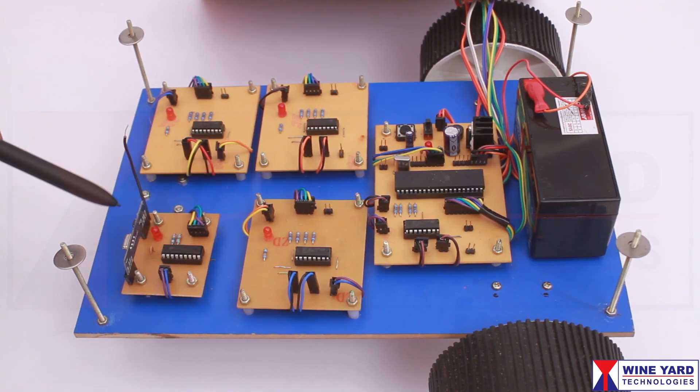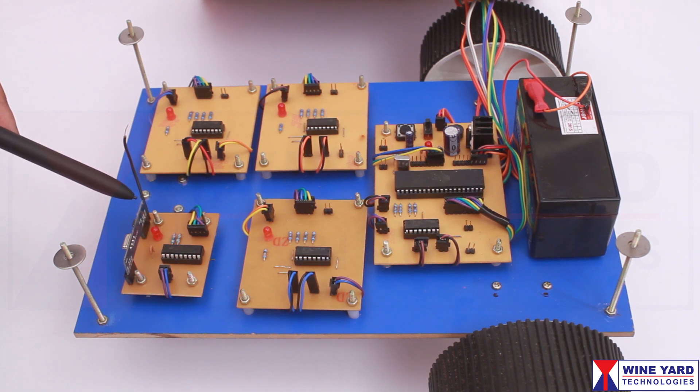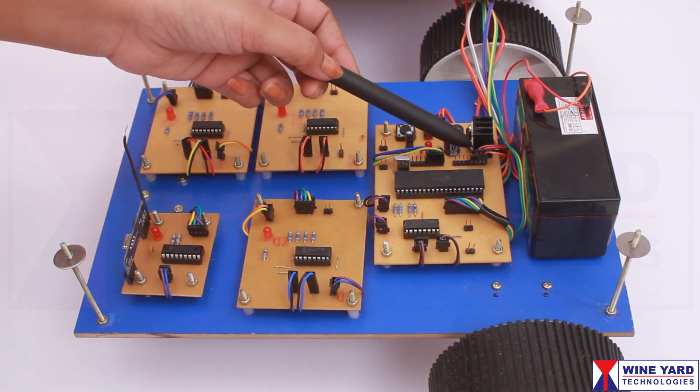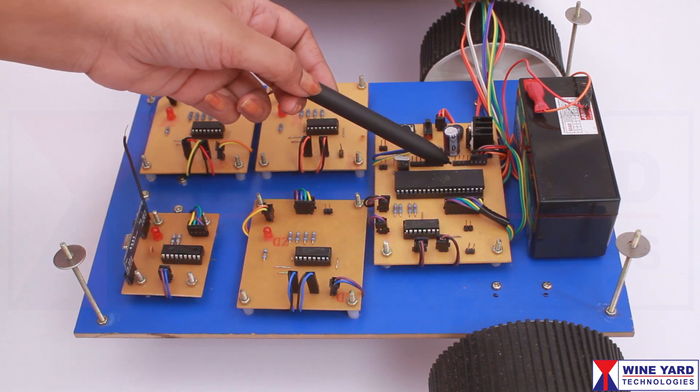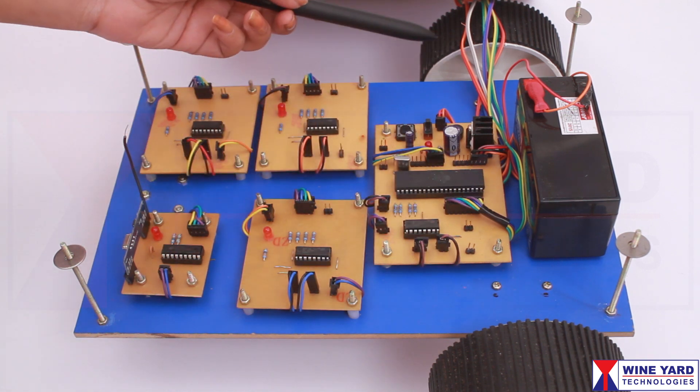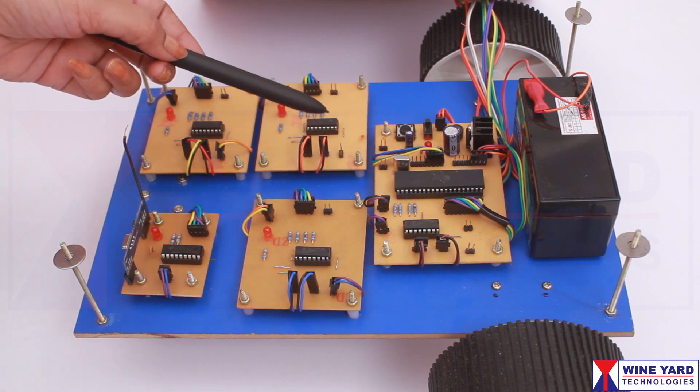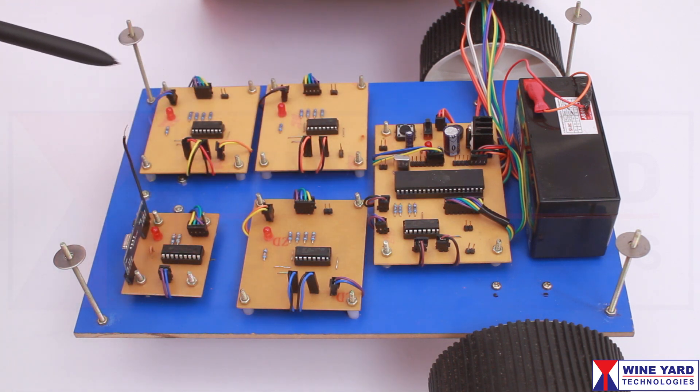The RF receiver module accepts the instruction given by the remote and decodes. This microcontroller reads the decoded signal and controls the gear DC motors accordingly. Five H-bridge ICs are used to control the gear DC motors of the robotic arm and the base.